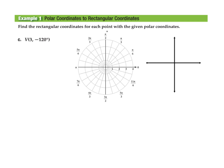Here's one final example. We have point V at (3, -120°). Positive 120° is in the second quadrant, and negative 120° is just that reflected across the polar axis, placing us in the third quadrant. The r value is 3, putting point V right there. Let's convert that to rectangular form: r = 3 and theta = -120°.